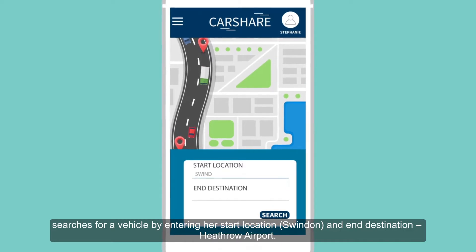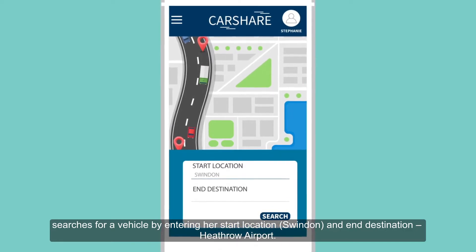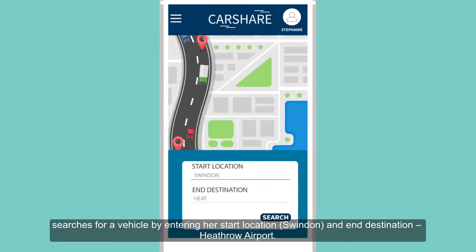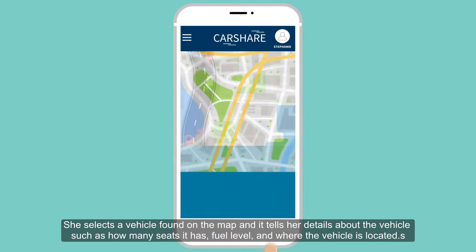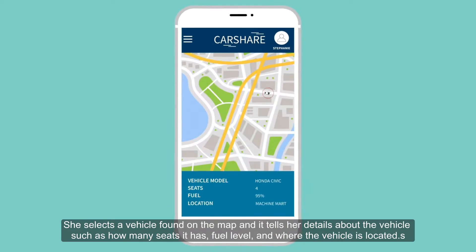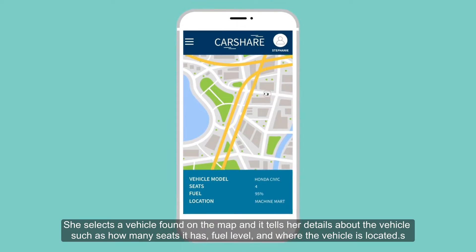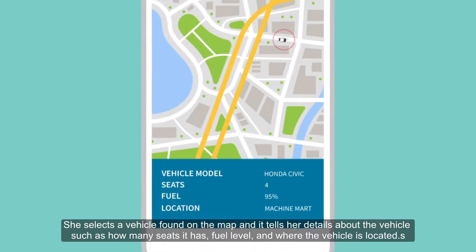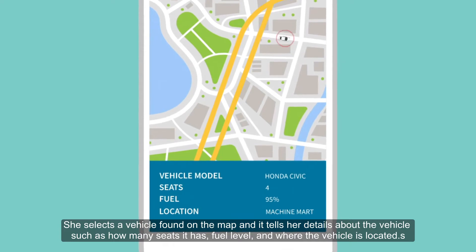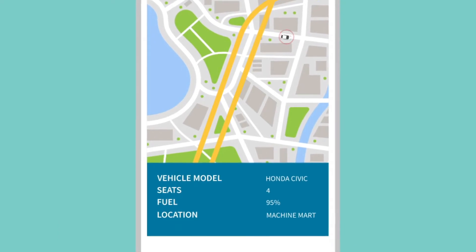She enters her start location, Swindon, and end destination, Heathrow Airport. She selects a vehicle found on the map and it tells her details about the vehicle, such as how many seats it has, fuel level and where the vehicle is located.